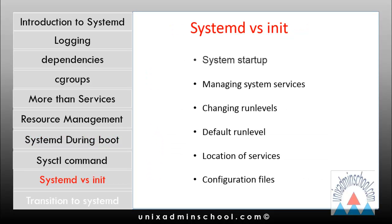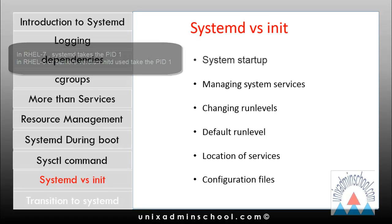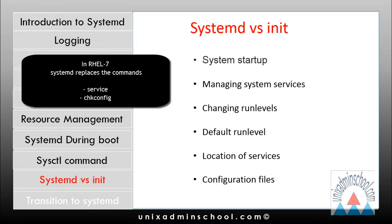Now we will discuss how systemd works differently compared to the traditional init process. The first area of difference is system startup: the systemd process is the first process — PID 1 — to run on a Red Hat Enterprise Linux 7 system. It initializes the system and launches all the services that were once started by the traditional init process. For RHEL 7, the systemctl command replaces the service and chkconfig commands.